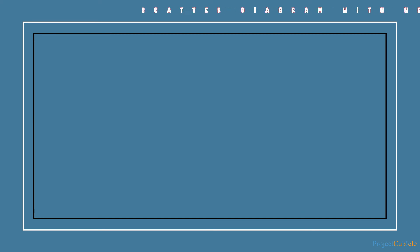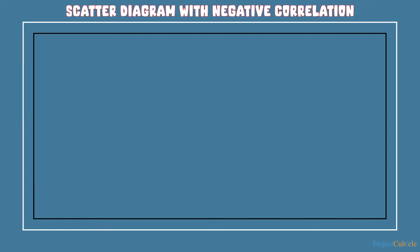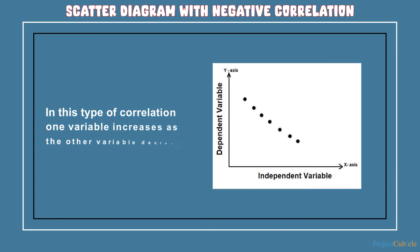In a scatter diagram with negative correlation, one variable increases as the other variable decreases. For example, if speed increases, travel time to a destination decreases.